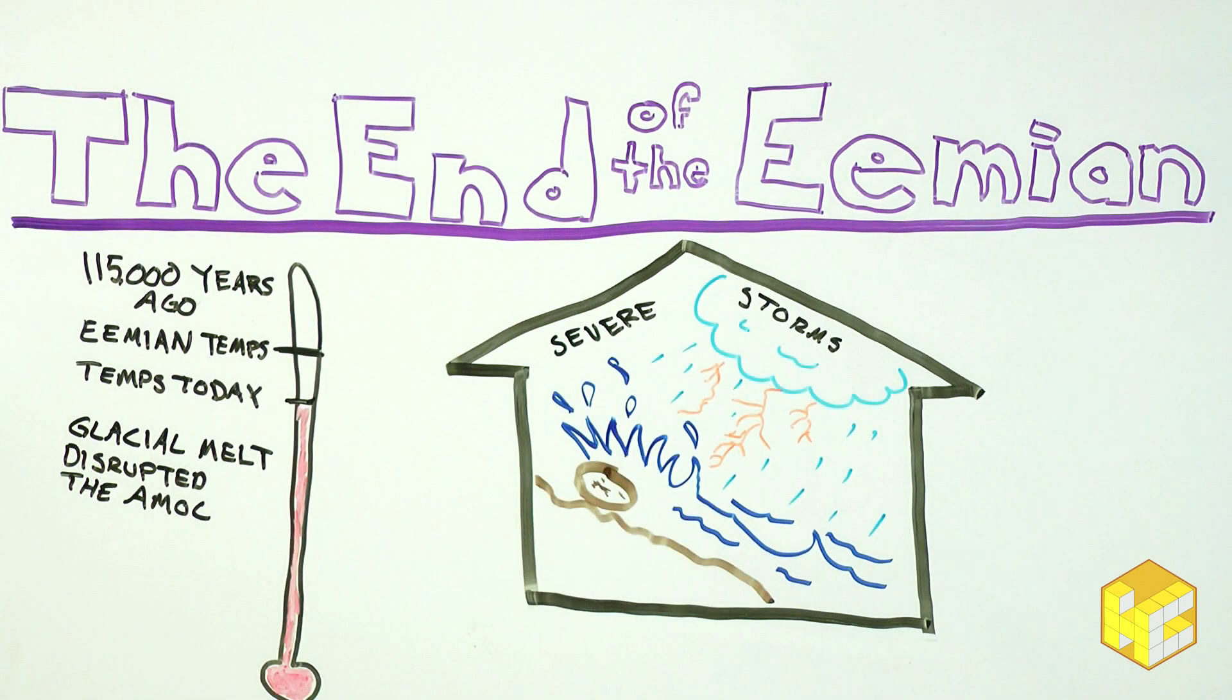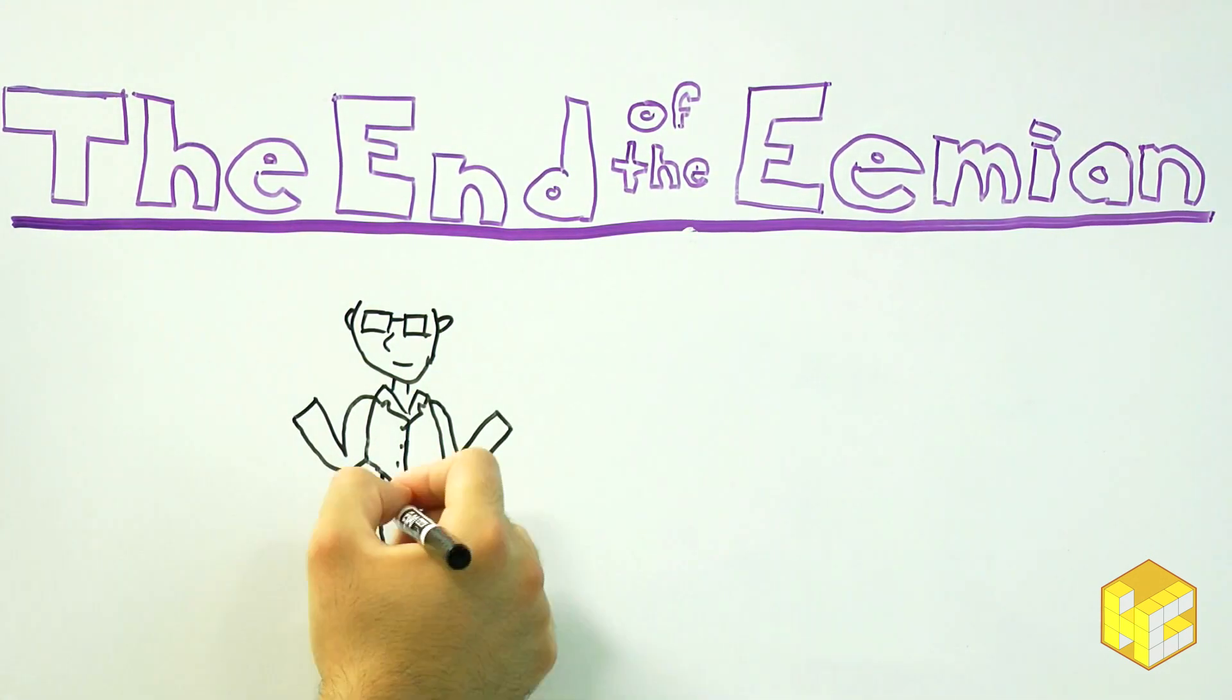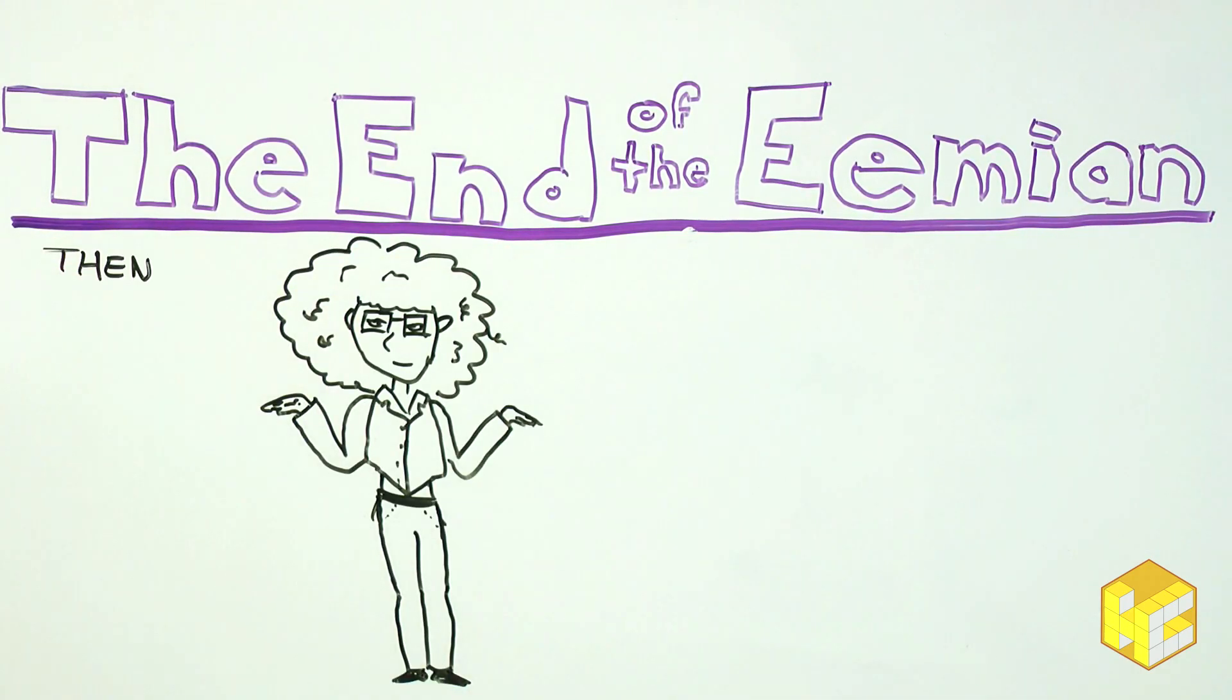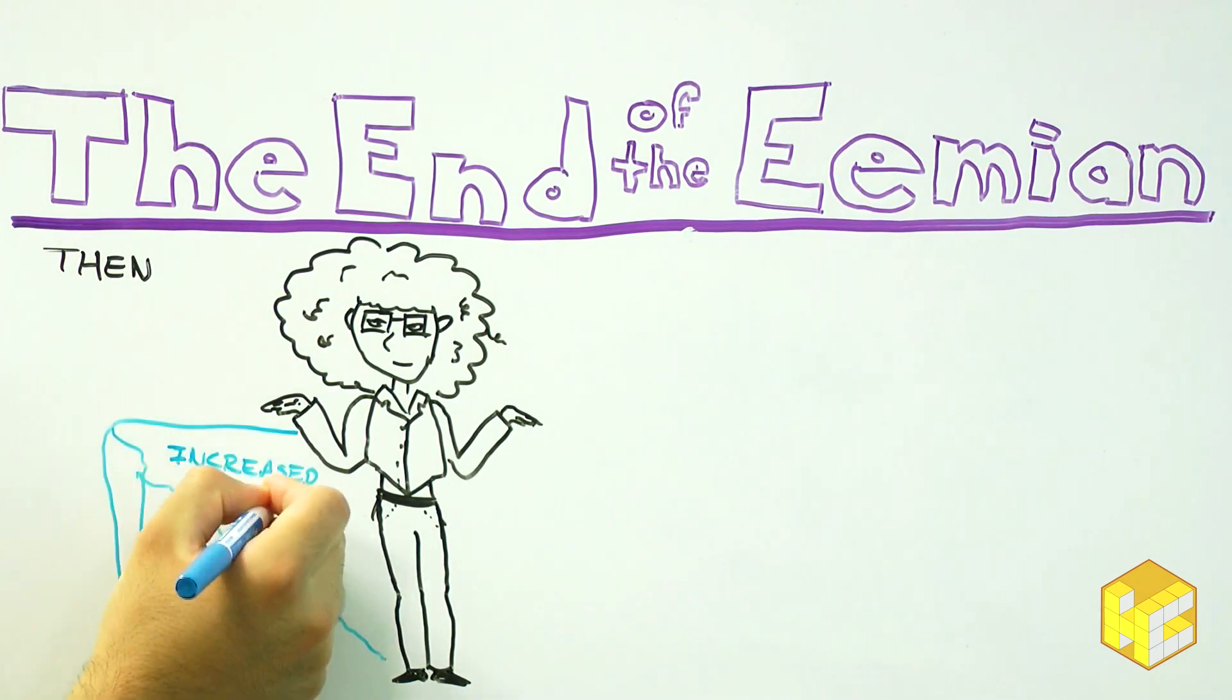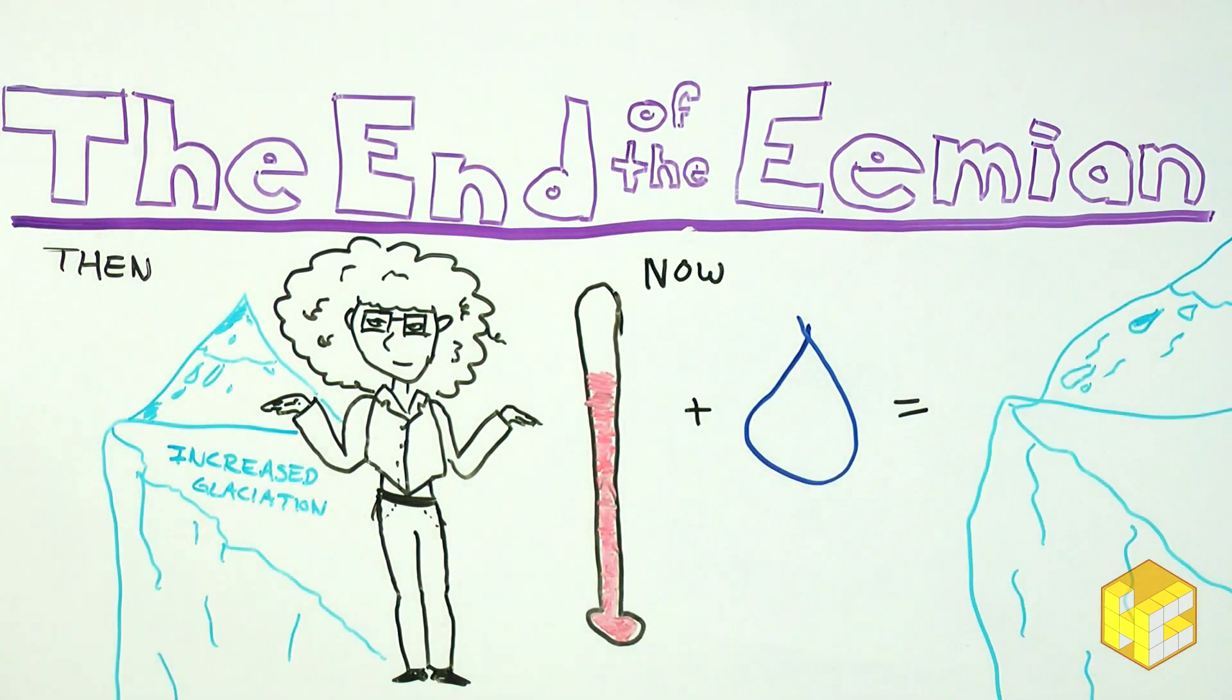The pattern eventually resulted in increased glaciation. Currently, temperatures and glacial melt are occurring at a much faster rate today than in ancient times. And, based on the study of ongoing trends of glacial melt in places like the Antarctic, some scientists are predicting a repeat of the end of the Eemian with the increasing severity and frequency of storms before another period of glaciation begins.